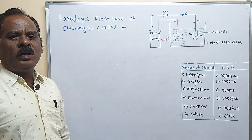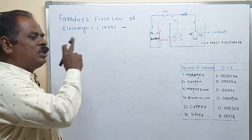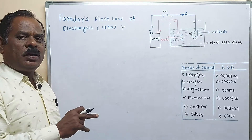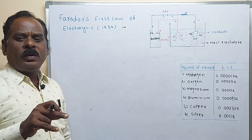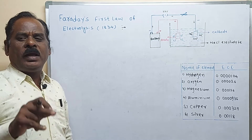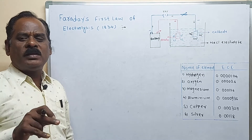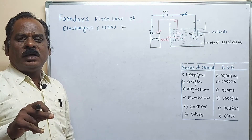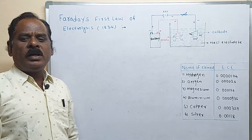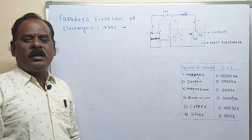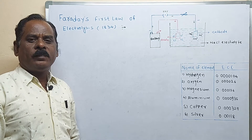What is the law? The amount of substances deposited or liberated on the electrode during electrolysis is directly proportional to the quantity of electricity passed through an electrolyte.